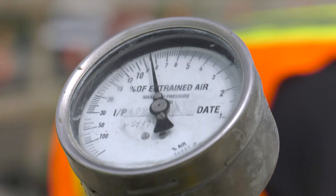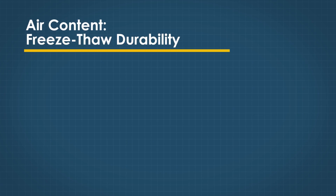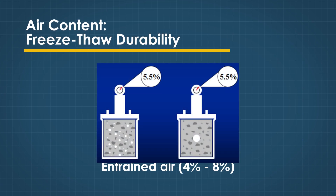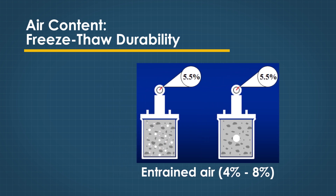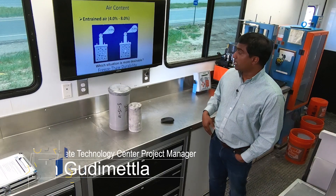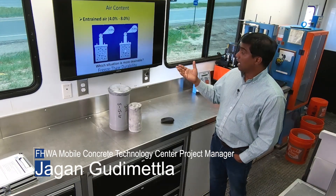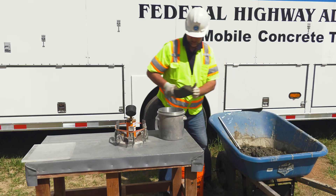Good SAM number results indicate an air system that will accommodate the water expansion and help prevent the concrete from cracking. A traditional air meter only provides the percentage of air in the concrete mixture, which tells only part of the story. Two examples may have approximately the same amount of air but vary in the way the air is distributed. The illustration on the left has tiny bubbles spaced evenly throughout the concrete, which is preferred from a freeze-thaw durability standpoint. The one on the right shows pockets of big air bubbles, which is not freeze-thaw durable.